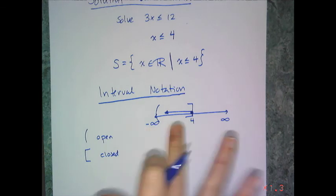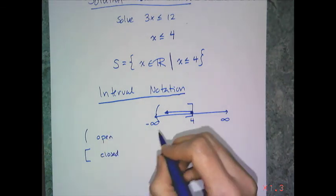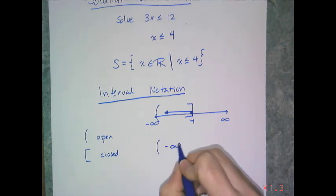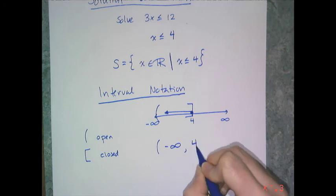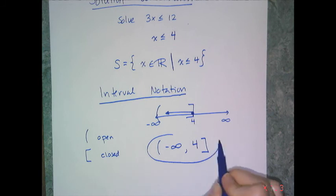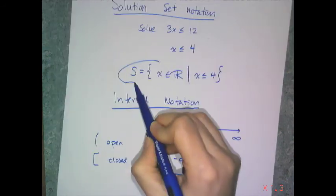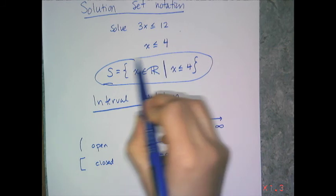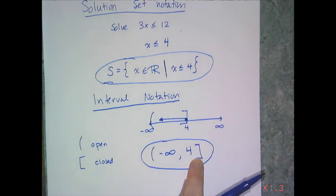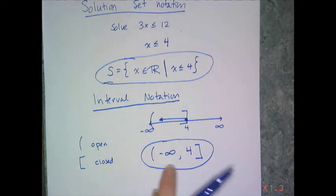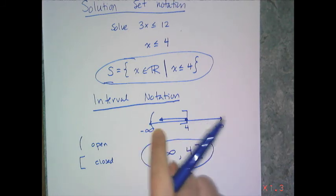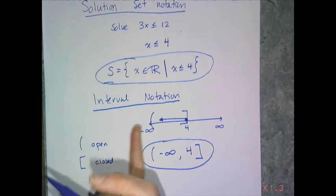I turn this picture into interval notation by writing the symbol, parentheses, then negative infinity, comma, the 4, and then the bracket. This right here is the interval notation of that solution set. When I write this, I'm telling everybody the interval or location of my answer starts at negative infinity and goes to 4. It literally follows the picture of the number line.